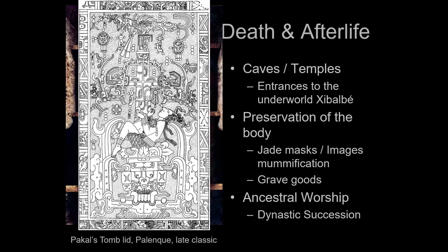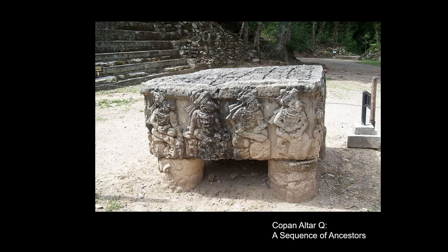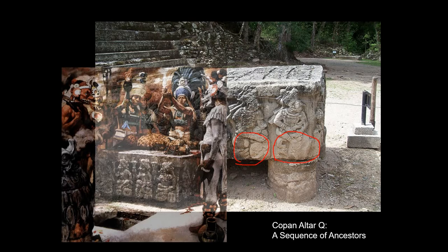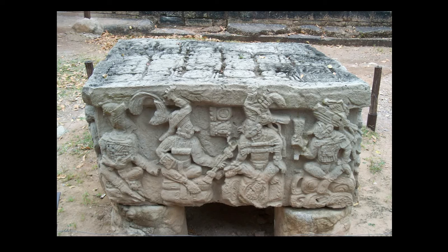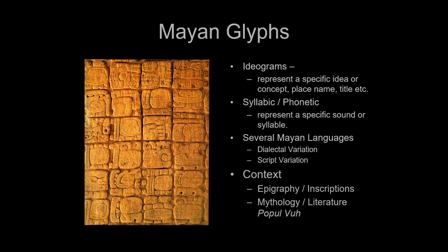Preservation of the body is important for the afterlife — we'll see jade masks, grave goods, and limited mummification. We're also going to see ancestral worship and dynastic succession. One thing I love is this altar from Copán. The altar has around it a sequence of 16 ancestors — four on each side — all seated on cushions. What's wonderful is that the cushions are actually the glyphs that spell their names. This altar exists as a way of reviving your ancestors so they are constantly present and can guide you. It shows the great imagination of the Mayan scribes and artists.